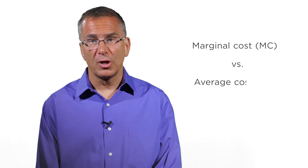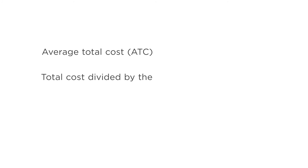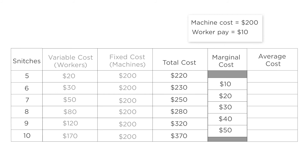It's important, however, to distinguish between marginal cost and average cost. Marginal cost is the cost of producing the next unit. Average total cost, or simply average cost, is the total cost divided by the number of units produced — or, on average, the cost per unit. When the firm is producing five snitches, we saw that the marginal cost to produce the next one is $10. The average cost is the total cost, $220, divided by the number of units produced, five, which equals $44 per unit. We can make the same calculation to find the average cost for the other levels of production as well.